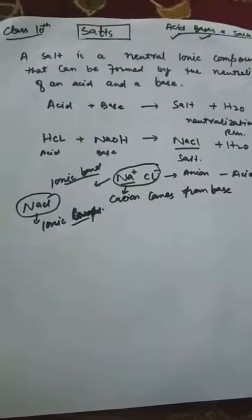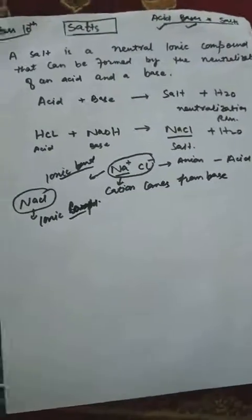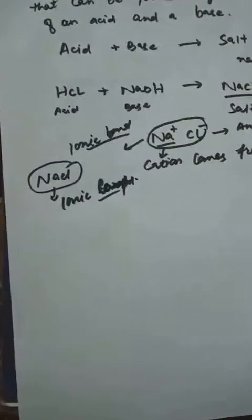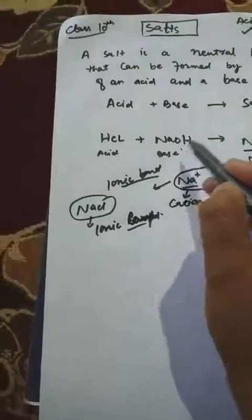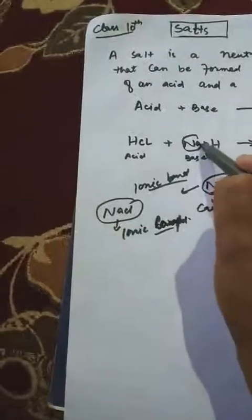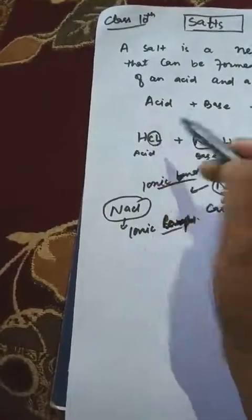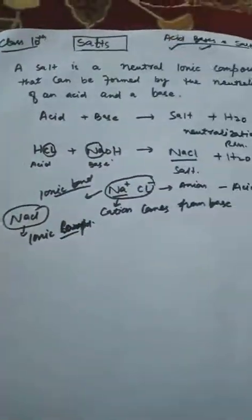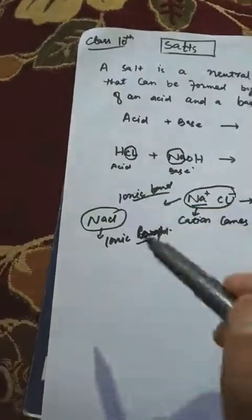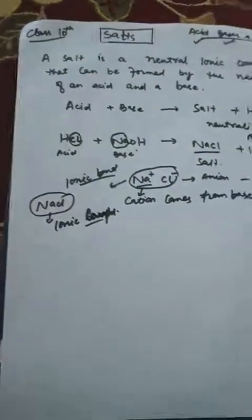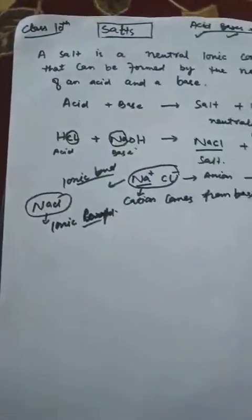So remember: when salt is formed, the cation comes from the base and the anion comes from the acid. For example, Na⁺ comes from the base (NaOH) and Cl⁻ comes from the acid (HCl). In any salt, the cation comes from base and anion comes from acid.